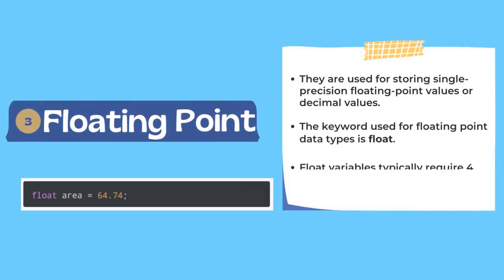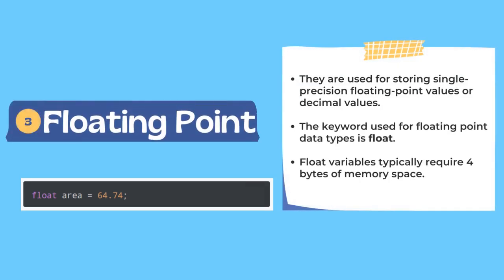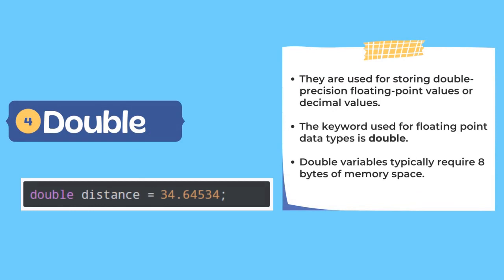The next primary data type is floating point. A floating point variable can store decimal values with single precision, meaning up to seven decimal digits. The keyword used is float, and it takes four bytes of memory space. In this example, I have declared a variable area of float type and stored a floating value to it.